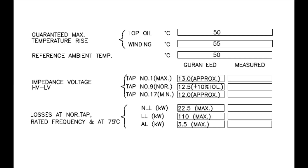Different losses are mentioned at 75°C. The maximum no-load loss is 22.5 kW — this is the calculated maximum, and the measured loss must be within this limit. The load loss, that is the copper loss, is 110 kW, which is again the maximum limit the measured loss must stay within. The auxiliary loss, including fan loss and any other losses, is 3.5 kW maximum.